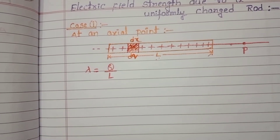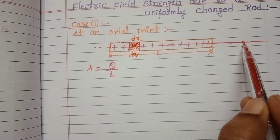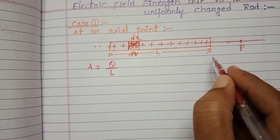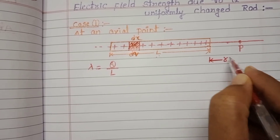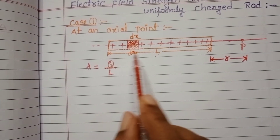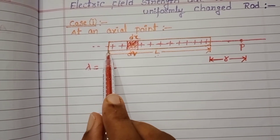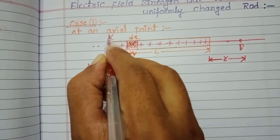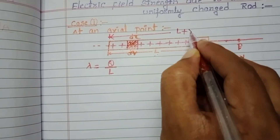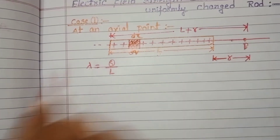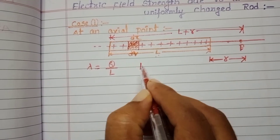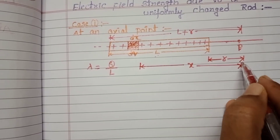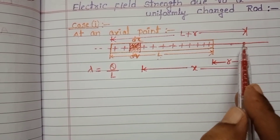Due to this element, the intensity of electric field produced at point P can be found. The distance of separation from the near end of the rod to point P, let it be R. The total length of the rod is L, so the distance from the far end of the rod to point P is L plus R. The distance from the smallest element to point P is X.